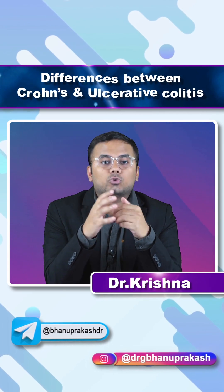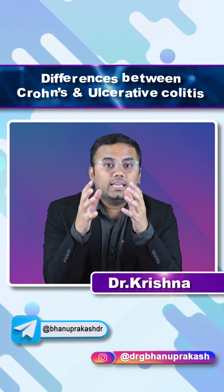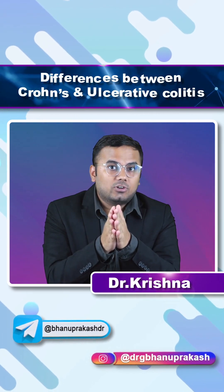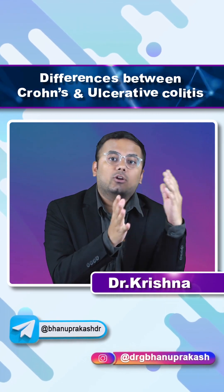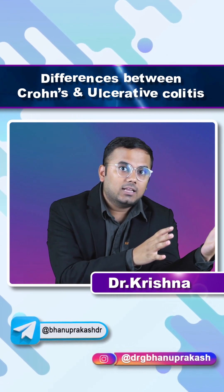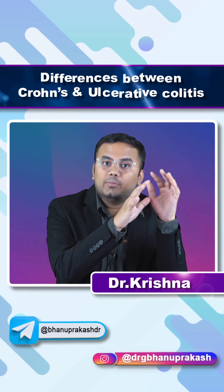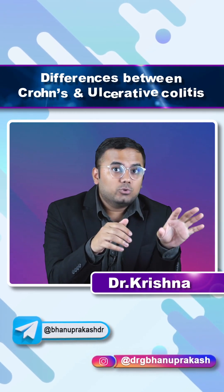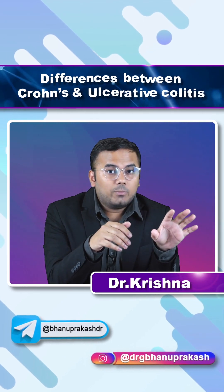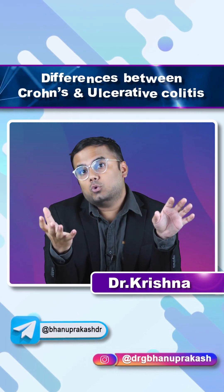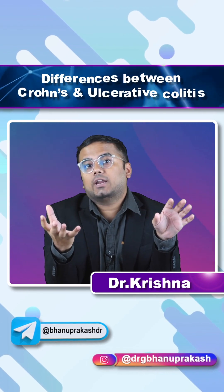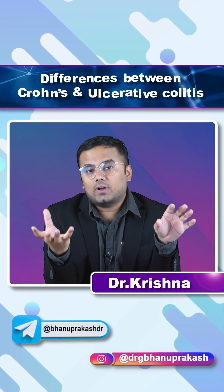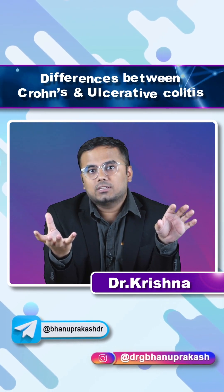In Crohn's disease you will see increased goblet cells on histology, and on the opposite end in ulcerative colitis there will be decreased goblet cells. In Crohn's you see granulomas, whereas there are no granulomas in ulcerative colitis.